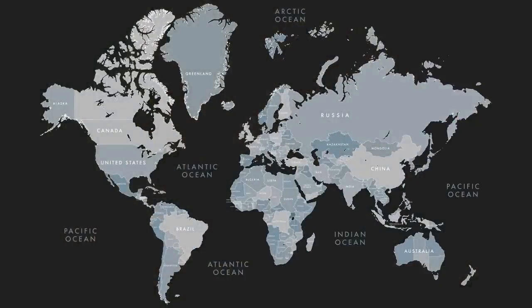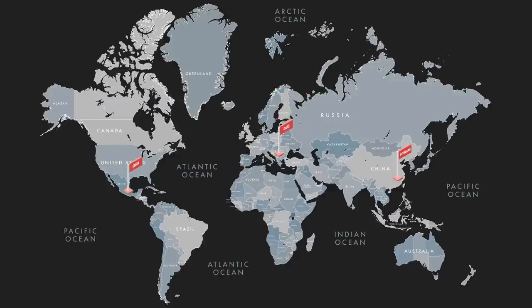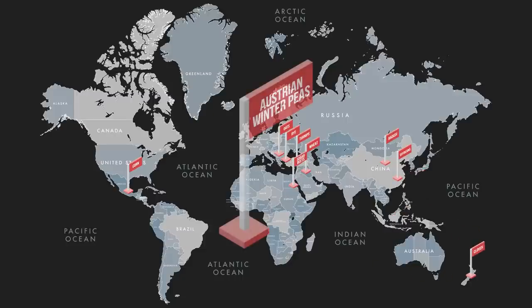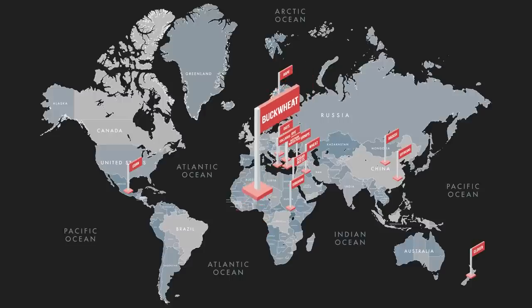Most food plot species are non-native. Soybeans come from China. Corn originated in Mexico. Oats are from Asia. Rye is also from Asia. Wheat comes from the region of Iraq. Turnips are from Asia. Radishes are from China. Sugar beets come from Egypt. Most clovers come from Europe — New Zealand is where a lot of those clovers originate. Austrian winter peas come from Turkey.